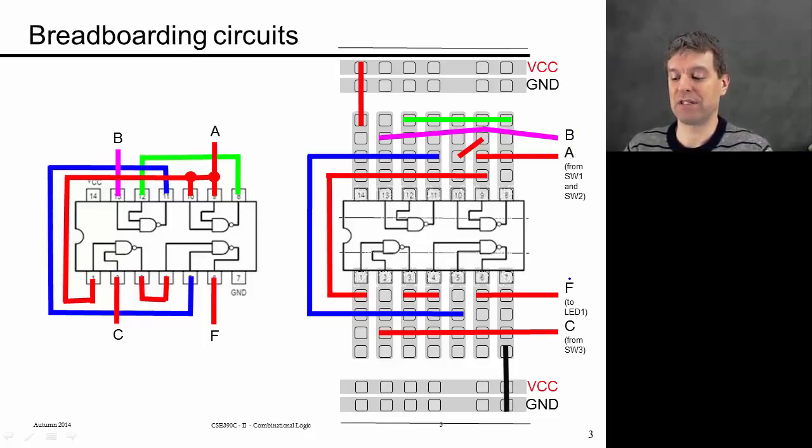And specifically in your lab, the output, the final output F here, is going to be connected to an LED, so it's going to be a little light signal. And your inputs A, B, and C are essentially going to be switches that you can manually set to take different values.